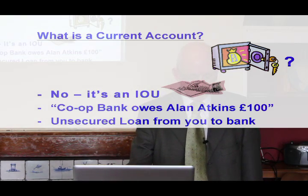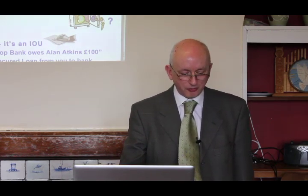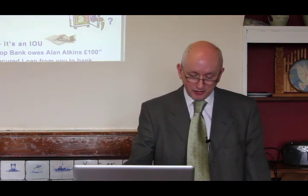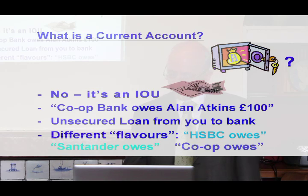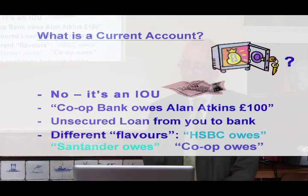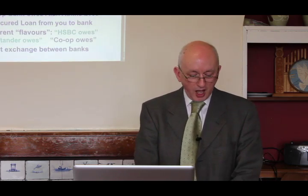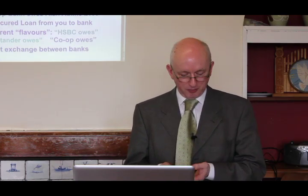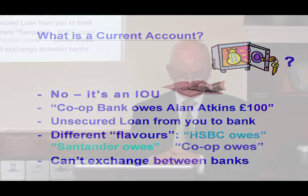You don't normally think of it like that, but when Robert Peston said on the news that Northern Rock was having problems and the bank seemed to be in difficulties, people realized soon enough that it was an unsecured loan and they formed big queues outside the branches to try to get their money back before it ran out. The other implication of it being an IOU from a bank is that there are different flavours of this type of money. If HSBC owes you some money it's a completely different thing from the Co-op Bank or Santander giving you an IOU — they're not directly transferable. If I've got a statement from the Co-op Bank saying I've got a hundred pounds, I can't take that into a branch of HSBC and ask for the money.